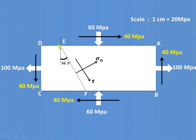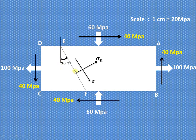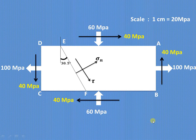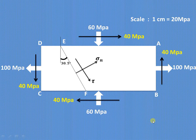Now let us consider a plane EF within the material making an angle of 30.5 degrees with the vertical. We want to find the normal stress and tangential or shear stress acting on this plane. We will also find the major principal stress, minor principal stress, maximum shear stress, and the normal stress on the plane of maximum shear. Let us start with the construction procedure.